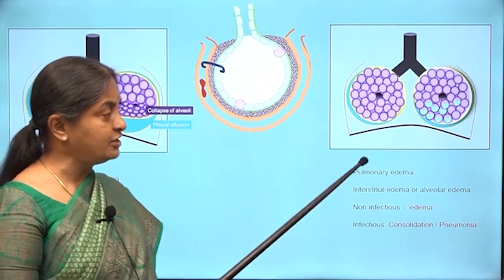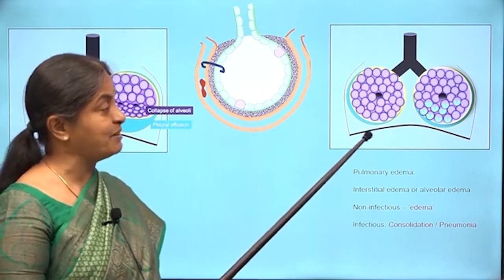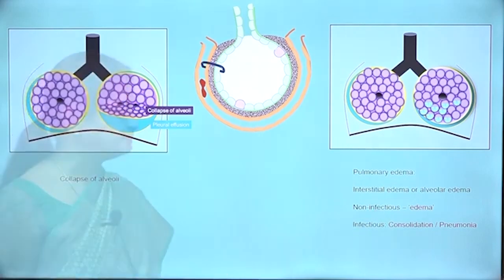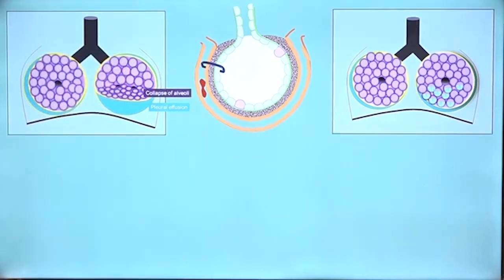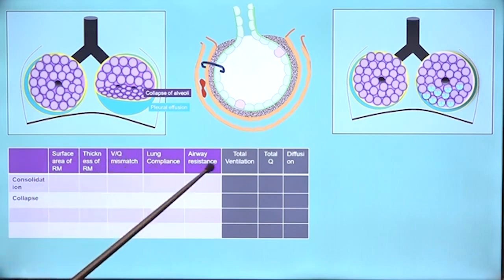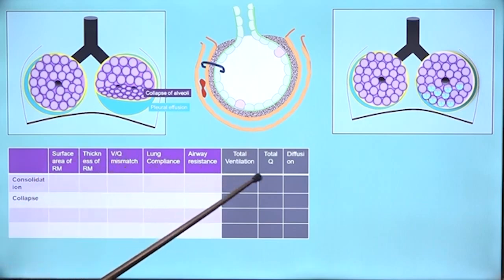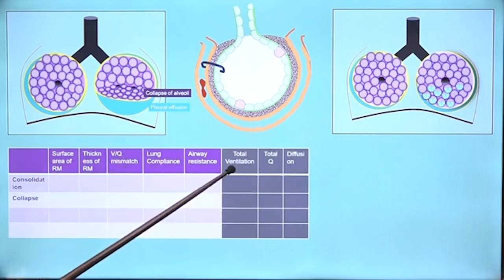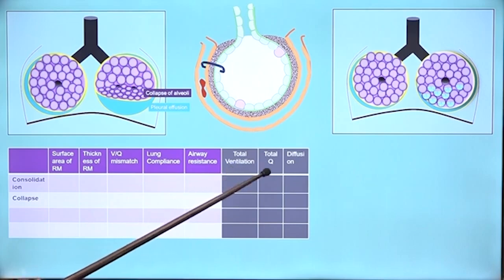So it amounts to thickening of the respiratory membrane. You could do a similar table for these conditions to understand what happens to each — is there a diffusion impairment or a ventilation impairment, and what about perfusion? These are questions you can answer for yourselves.